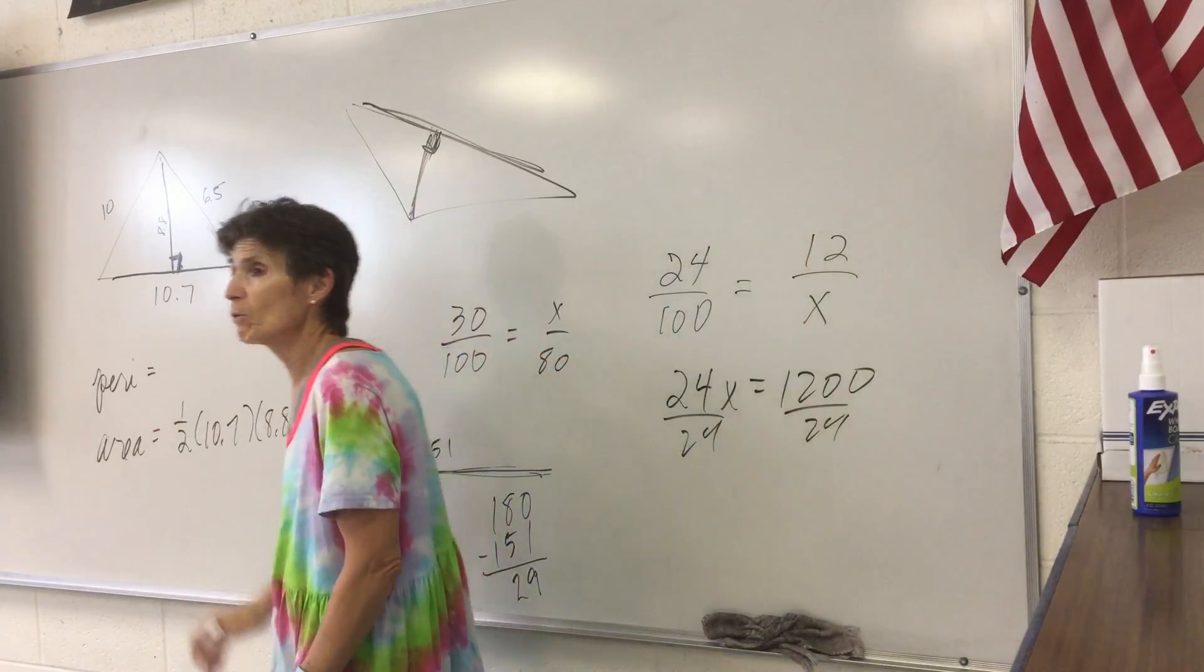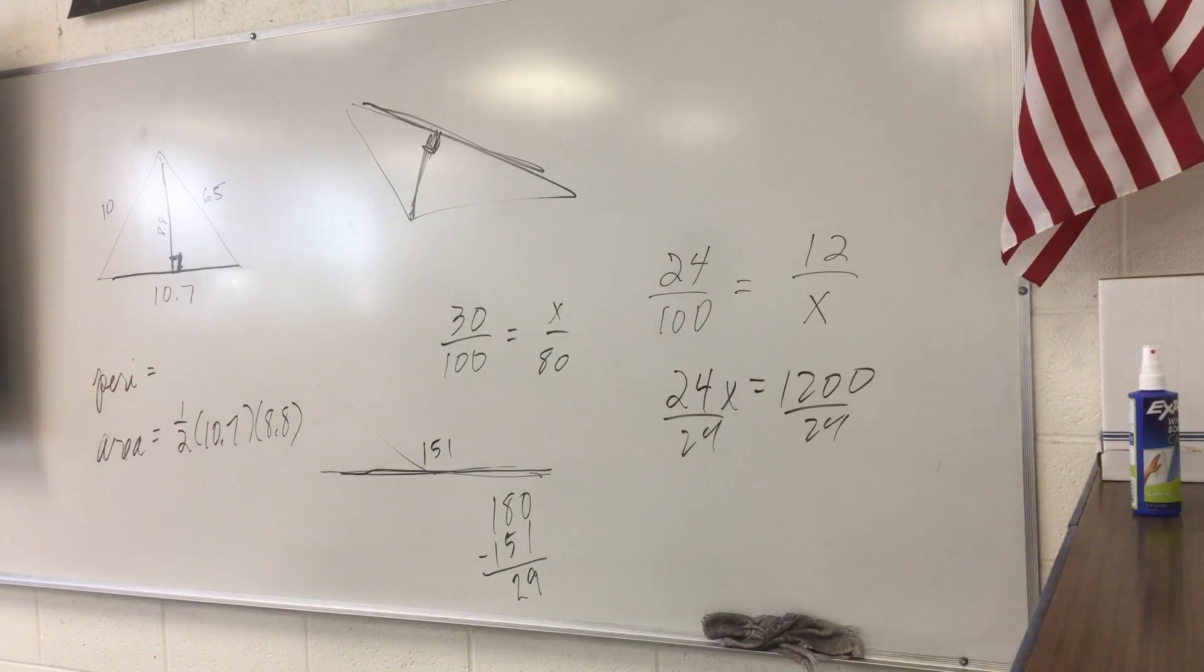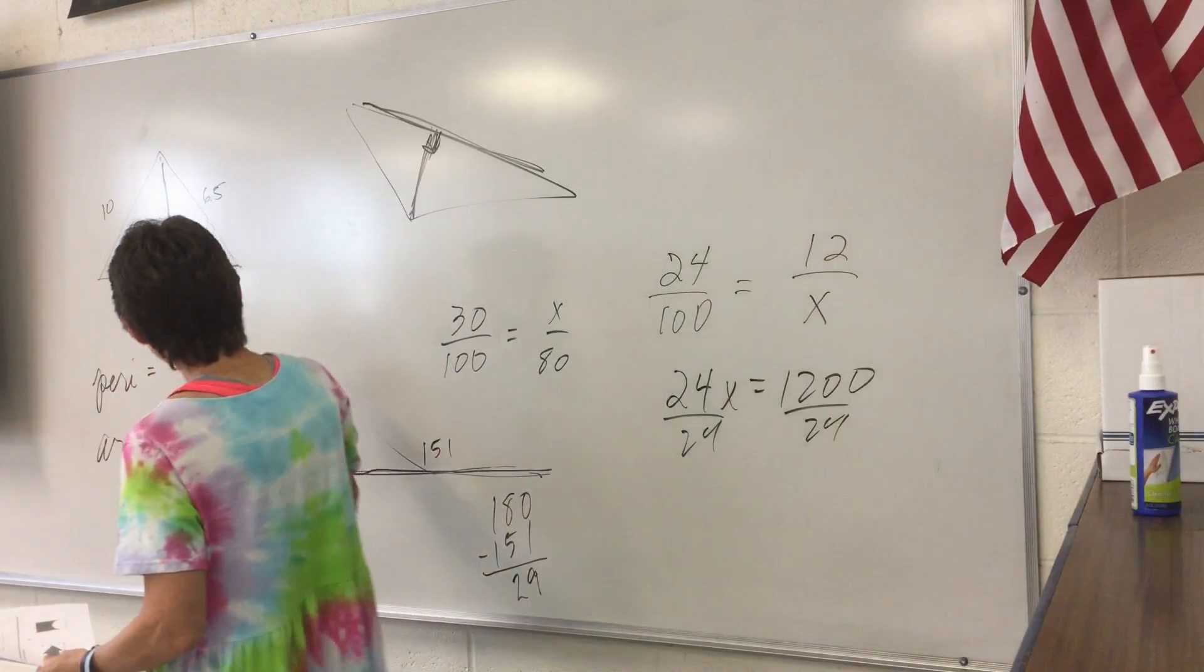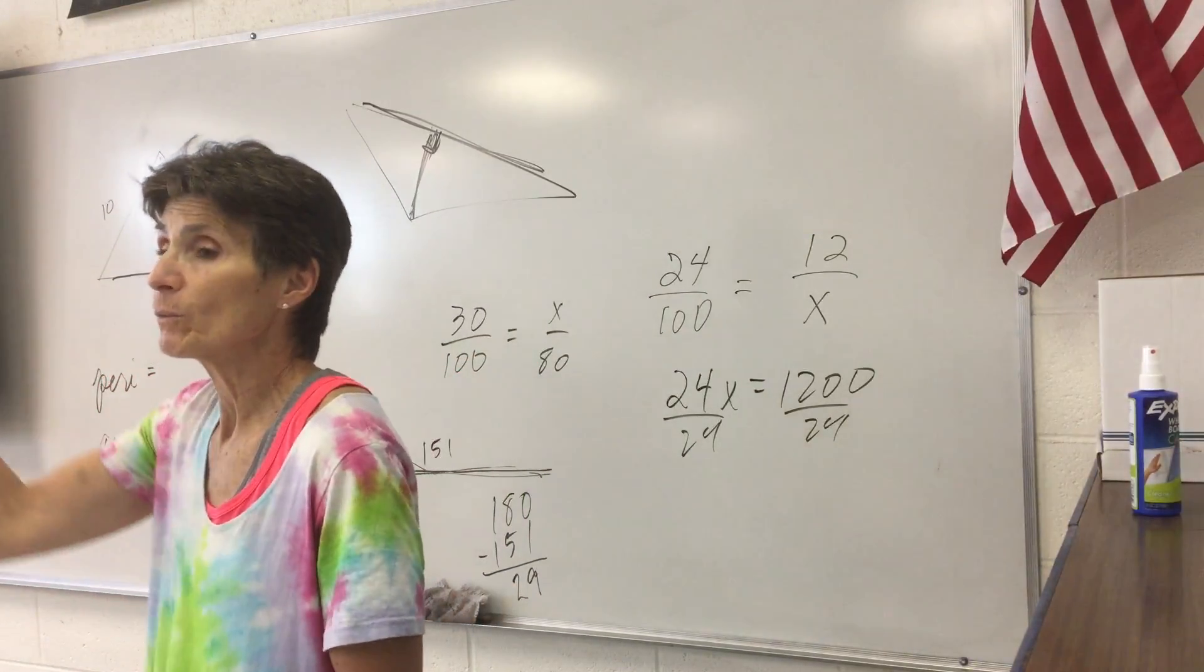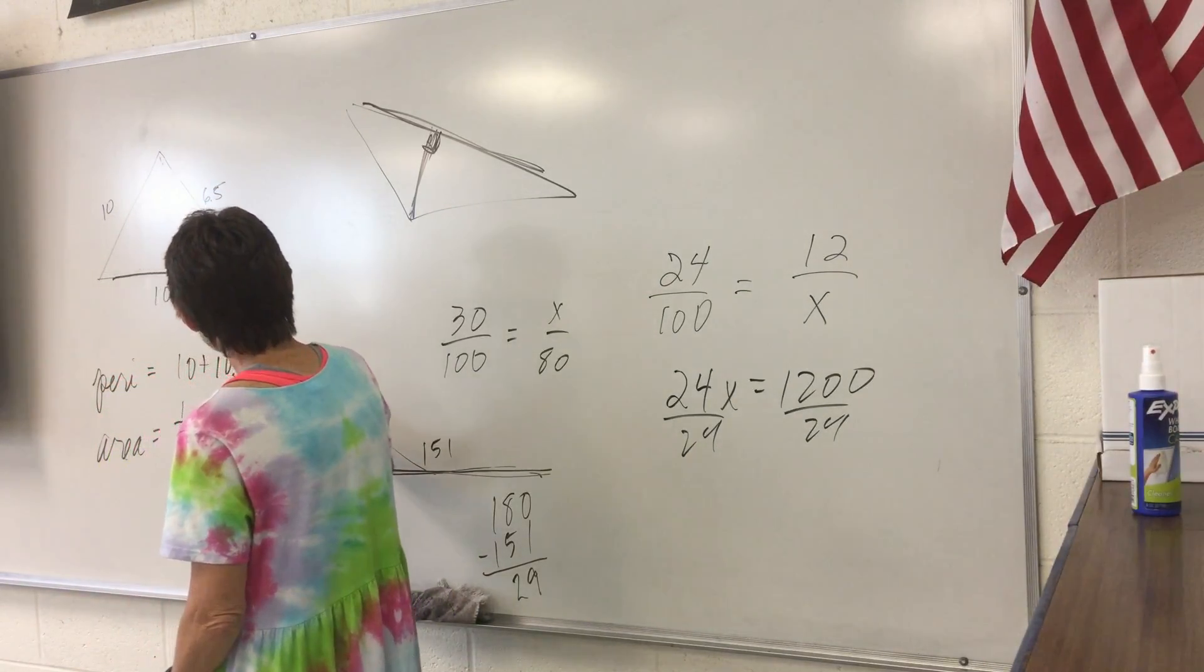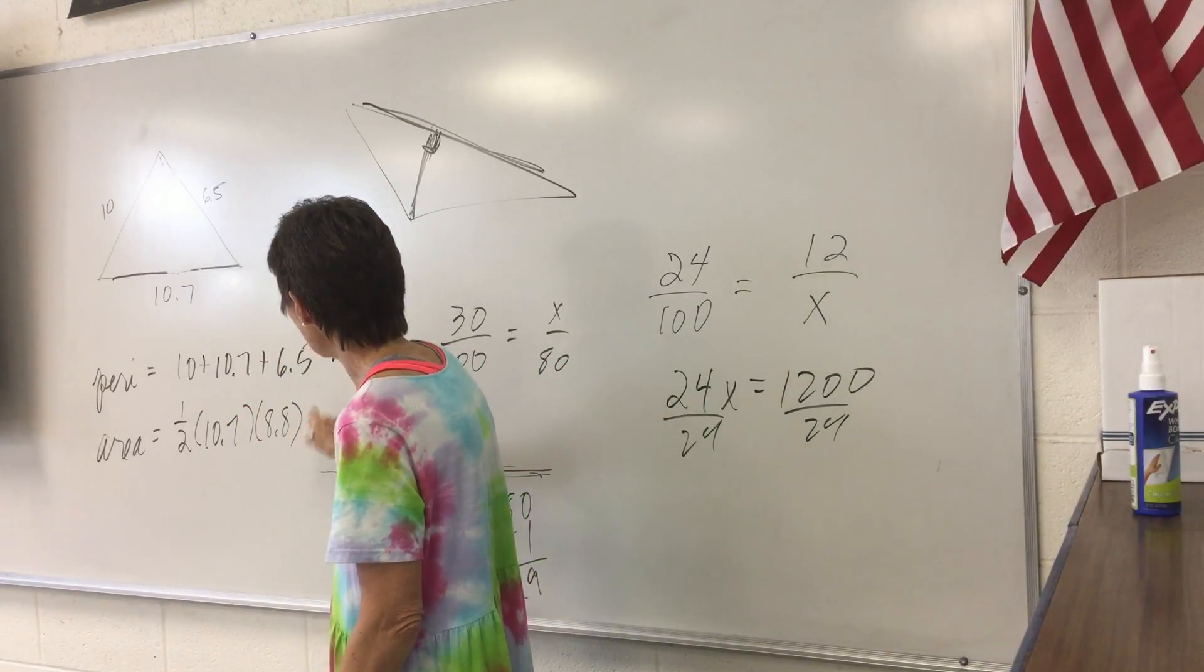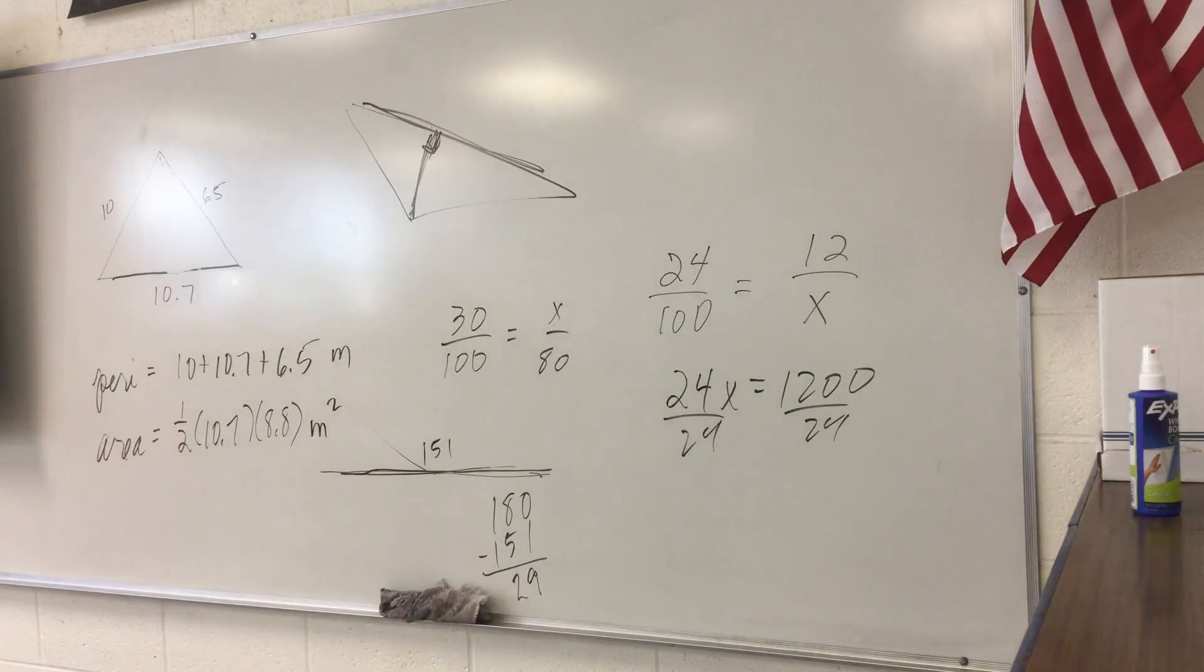Now, what does perimeter mean? The sides up. The sides up. Perimeter has nothing to do with this. That is on the inside. The perimeter is the outside. So we're going to add 10 and 10.7 and 6.5. And perimeter will be in meters and area will be square meters. And you have a calculator, so you're going to be typing that right in.